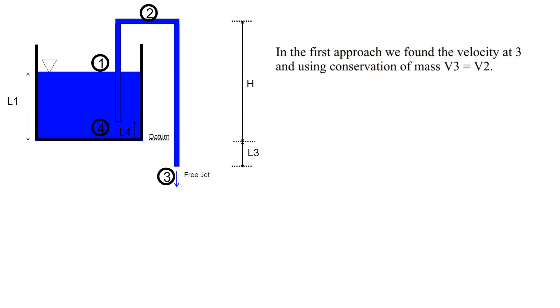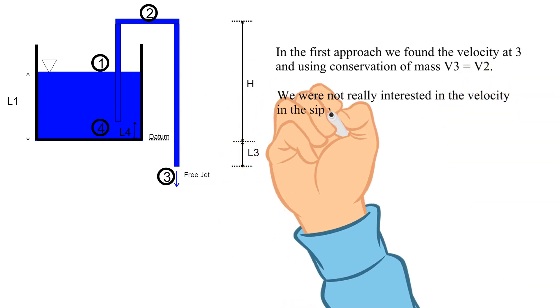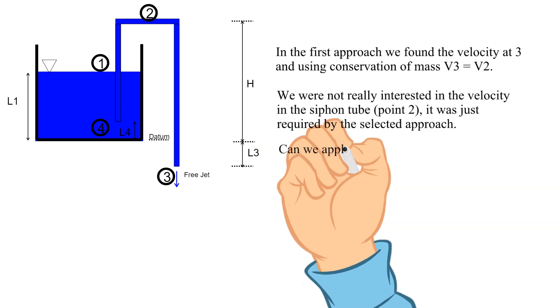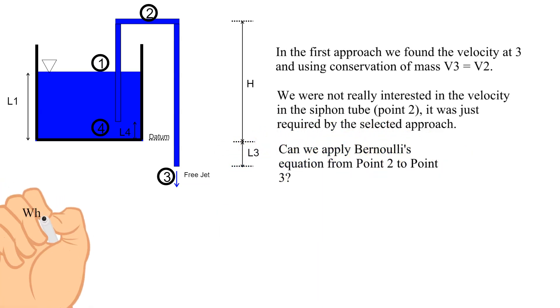In the first approach we found the velocity at 3 and using conservation of mass V3 equals V2. We were not really interested in the velocity in the siphon tube, it was just required by the selected approach. Can we apply Bernoulli's equation from point 2 to point 3?